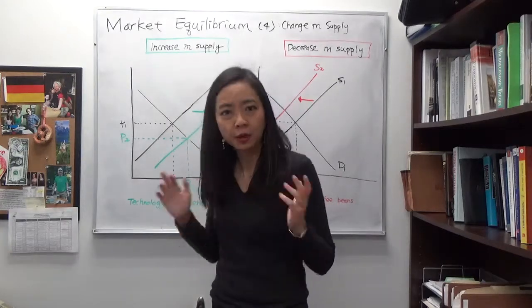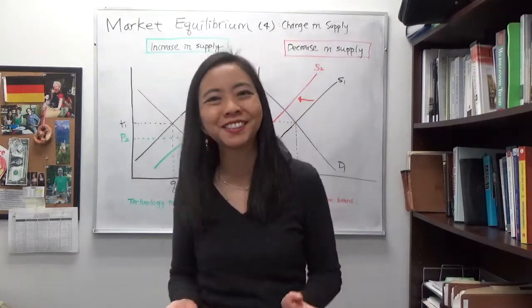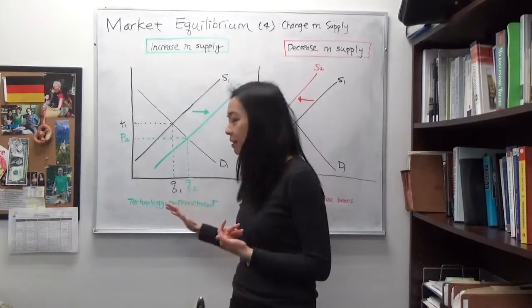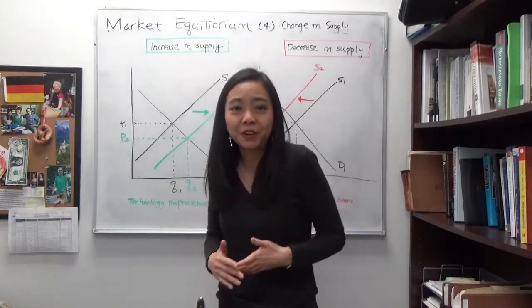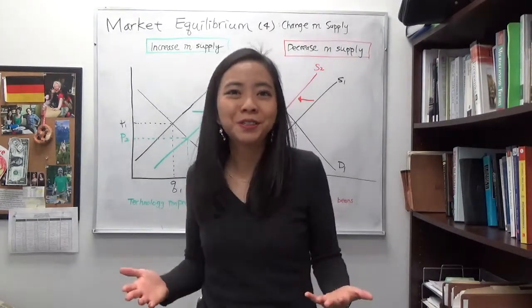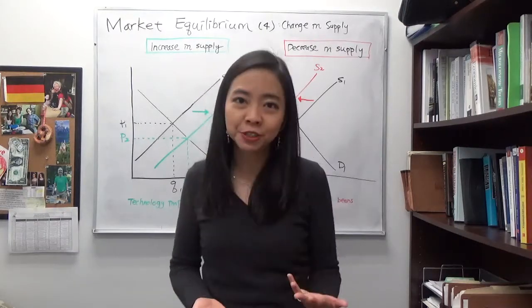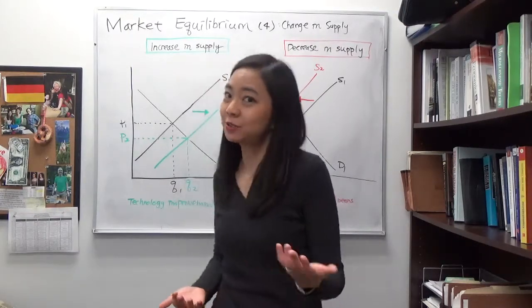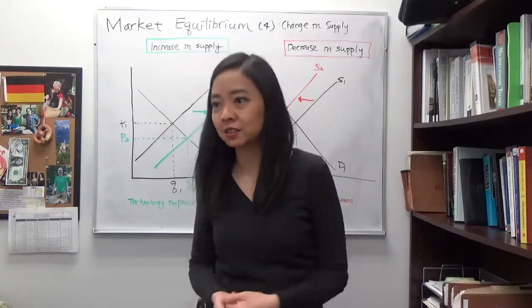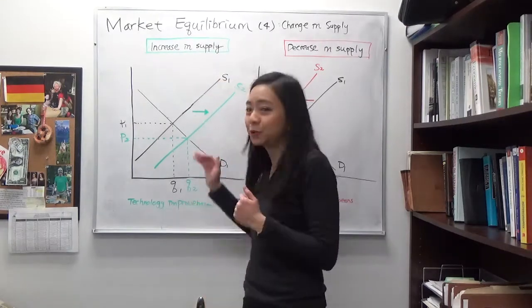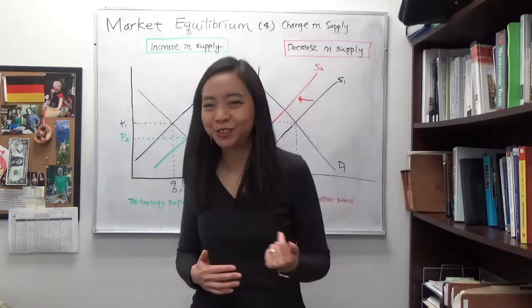Suppose there's an increase in supply. We know there are a lot of supply shifters, and one of them being technology improvement. So if there is better technology, better coffee machines that will be able to make our cappuccino more efficiently, faster, and using less coffee beans and less labor, then that's going to increase our supply of cappuccino.